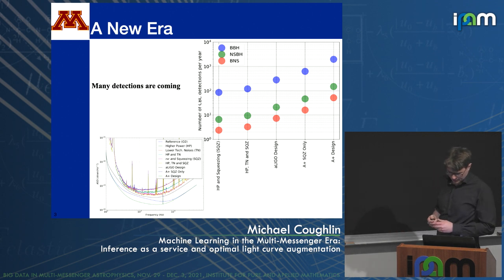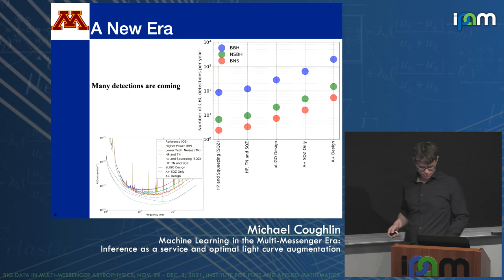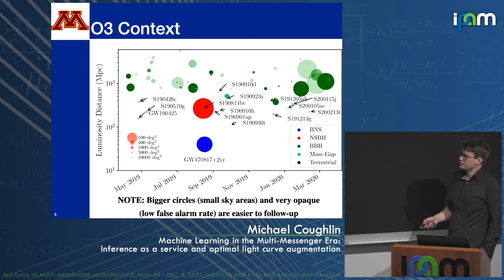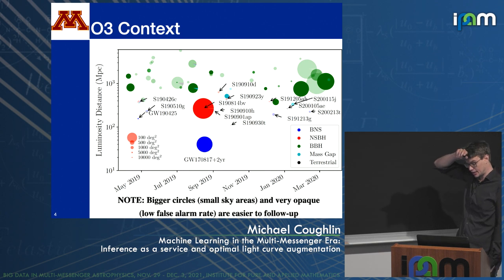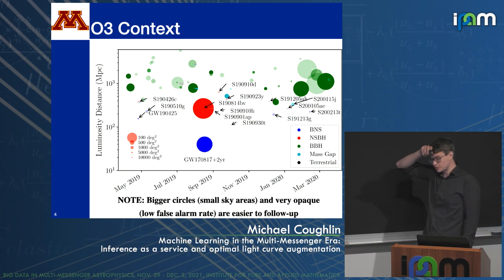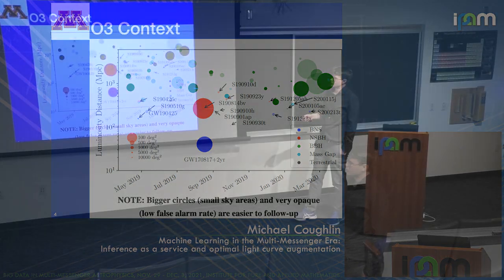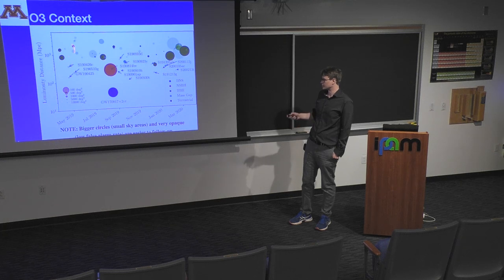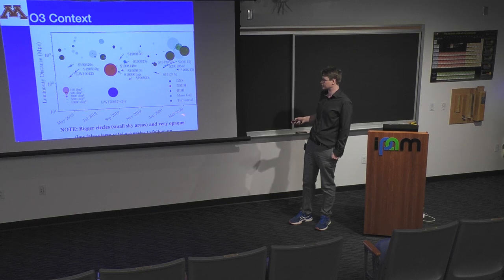We need to be thinking now about the ways we're going to handle this. To provide further context, here is a plot composed mostly of our O3 detections, with luminosity distance on the y-axis and actual time on the x-axis.